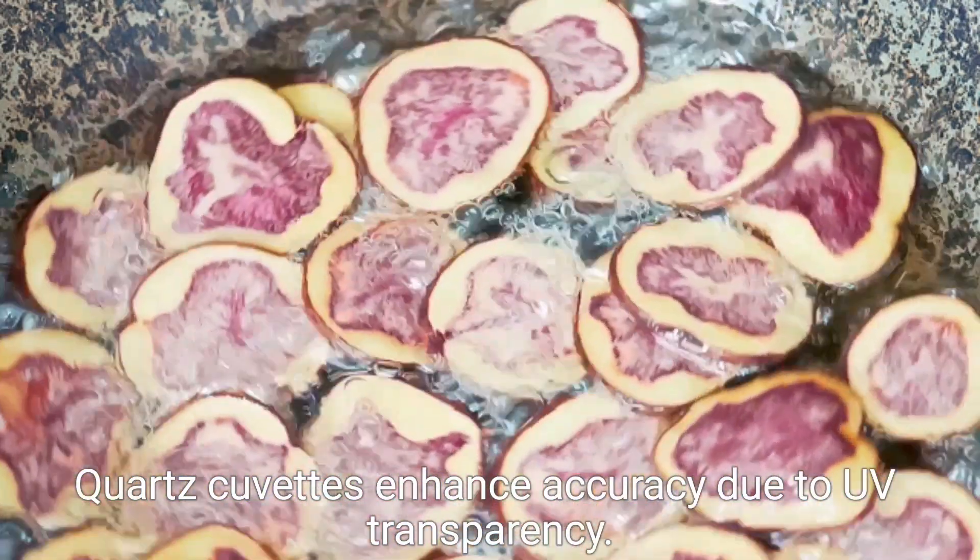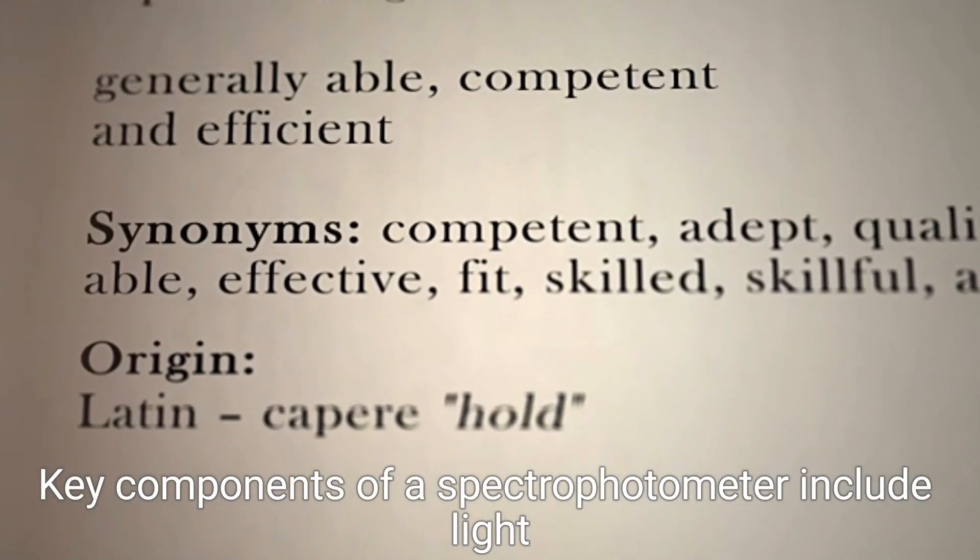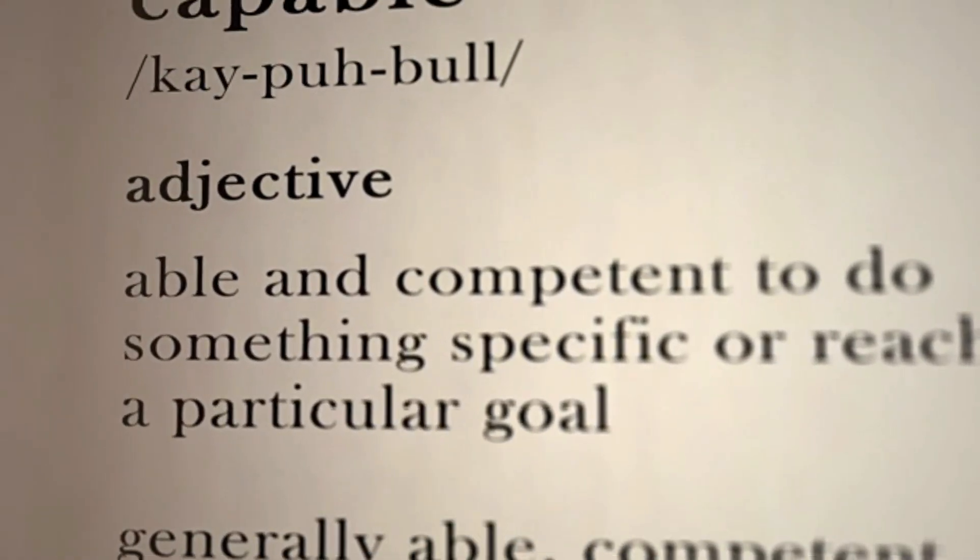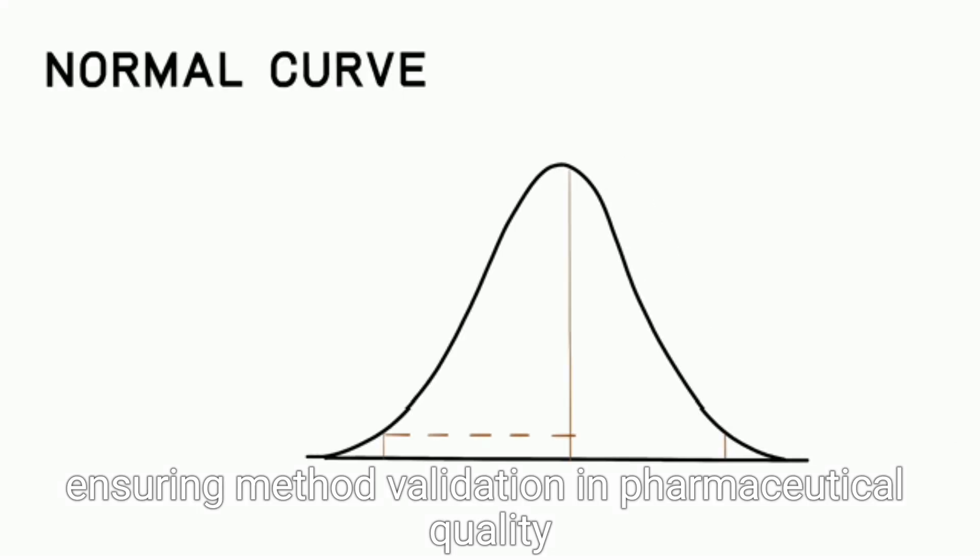Quartz cuvettes enhance accuracy due to UV transparency. Key components of a spectrophotometer include light sources, monochromators, and detectors. Building a calibration curve is essential for determining sample concentration, ensuring method validation in pharmaceutical quality.